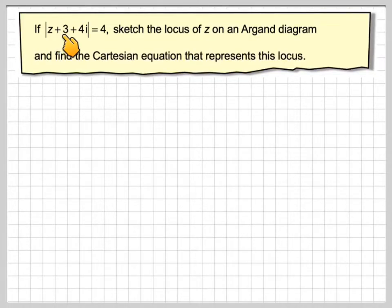If the modulus of z plus 3 plus 4i is equal to 4, sketch the locus of z on an Argand diagram, and find the Cartesian equation which represents this locus.